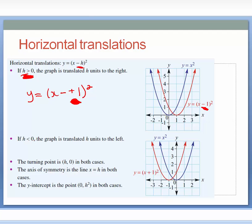If h is less than or equal to 0, the graph is translated h units to the left. With y equals x plus 1 all squared, you might think it should shift to the right, but this function can be rewritten as y equals x take negative 1 all squared. When you subtract a negative, it's the same as adding — that's how this is actually a shift to the left. I see x plus 1 all squared and I know the horizontal translation will be to the left, because it's the opposite of plus 1.